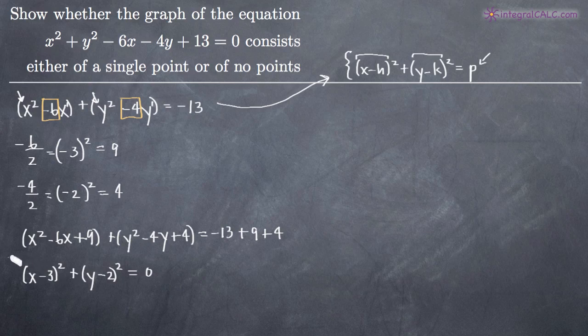Now you can see that our equation is in the same format as the formula. We have x minus 3 squared plus y minus 2 squared equals some constant. So now that we've got the same format, we can make an evaluation about the constant p.